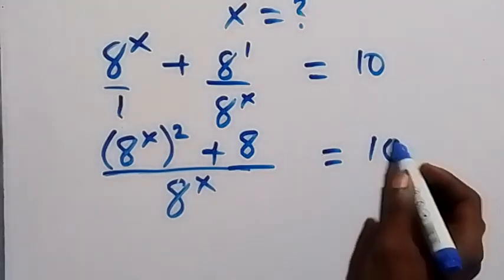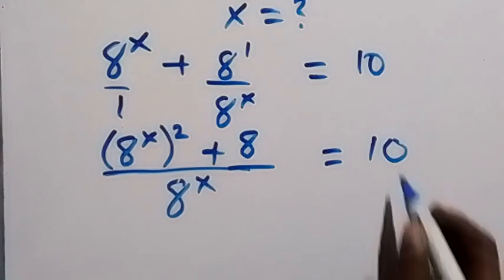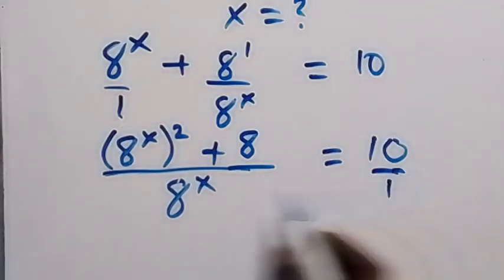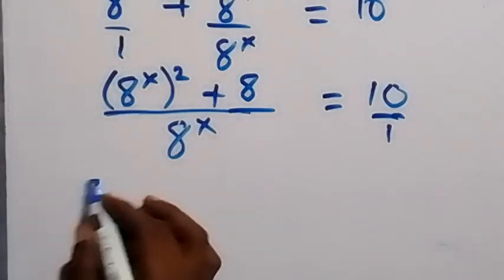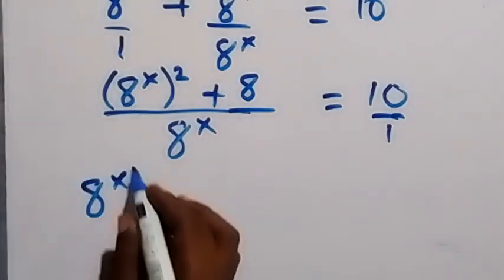And from here let's cross multiply, because this is 10 over 1. When we cross multiply, we have 8 raised to power x times 8 raised to power x.